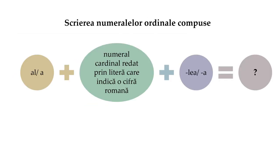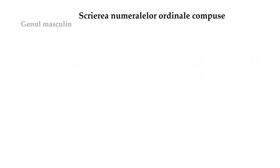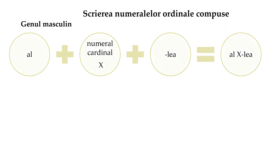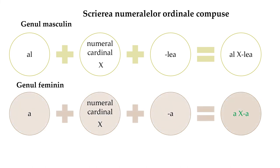Pentru a scrie corect numeralele ordinale compuse, este necesar să acorzi atenție situației în care numeralul cardinal, care face parte din structura numeralului ordinal compus, este redat printr-o literă care indică o cifră romană. Spre exemplu, forma de genul masculin al 10-lea poate fi scrisă astfel: componenta al, urmată de litera X, care indică cifra romană 10, cratimă și componenta lea. Forma de genul feminin, A10-a, este redată astfel: componenta A, urmată de litera X, care indică cifra romană 10, cratimă și componenta A.